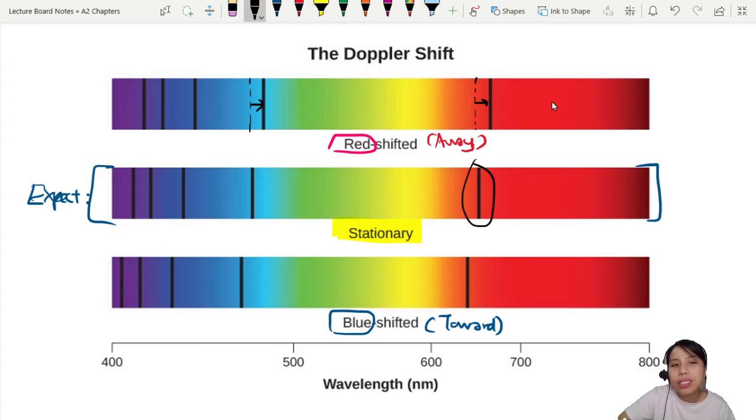So by seeing how the spectra has changed, it's like expectation versus reality. For blue shift, it's the other way. This line is supposed to be here, but now it has moved a little bit towards the blue side of the spectrum.